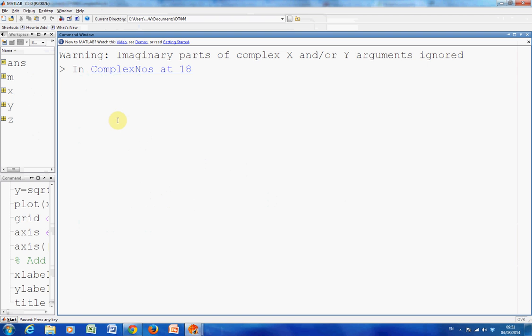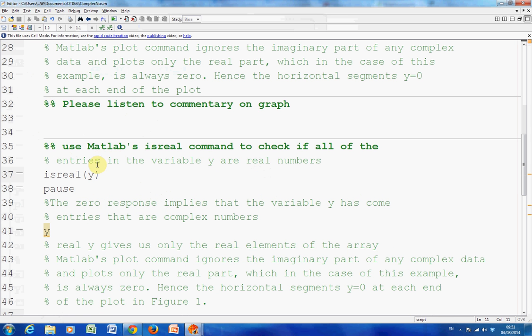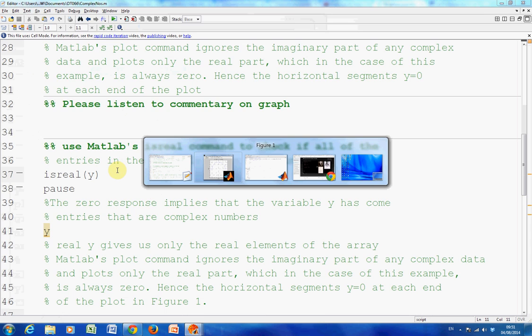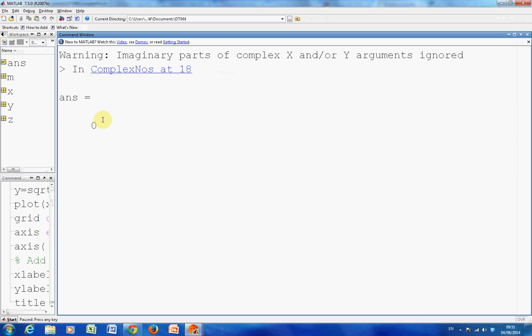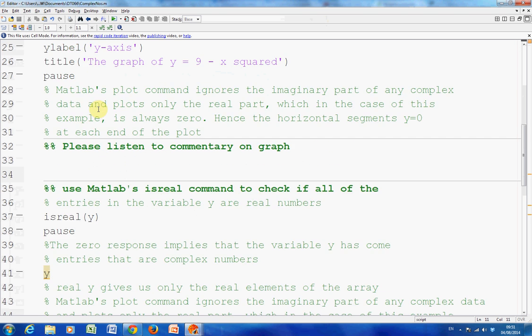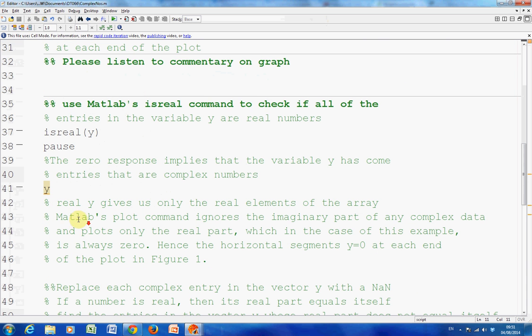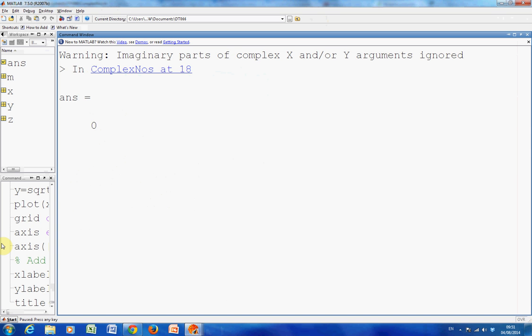We are going to use the isreal command to check if all the entries are real. The answer is zero. Zero is false. Remember y is the square root of nine minus x squared. So we have asked a question on line 37: Are all the elements of the vector y real? If they are all real, we get one. If one or more of the entries are complex, we get zero. We are on a pause at the moment on line 38.